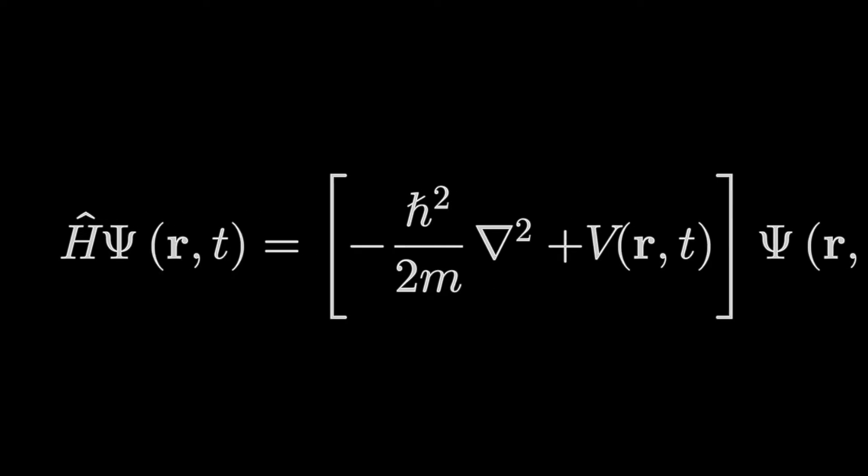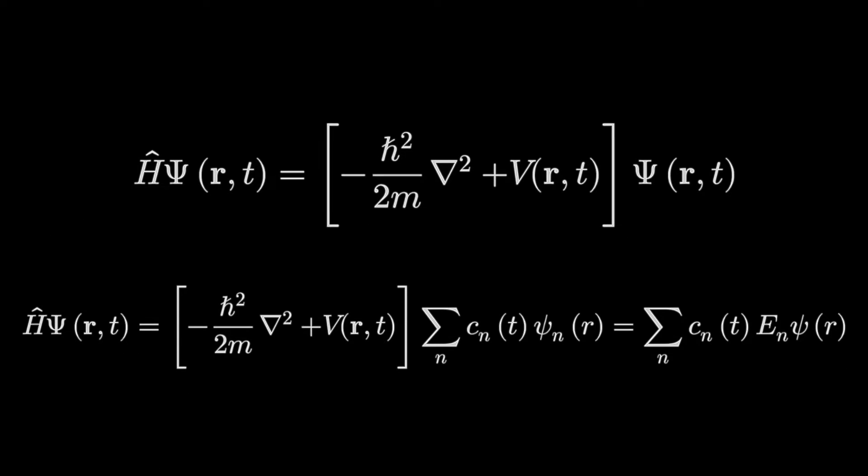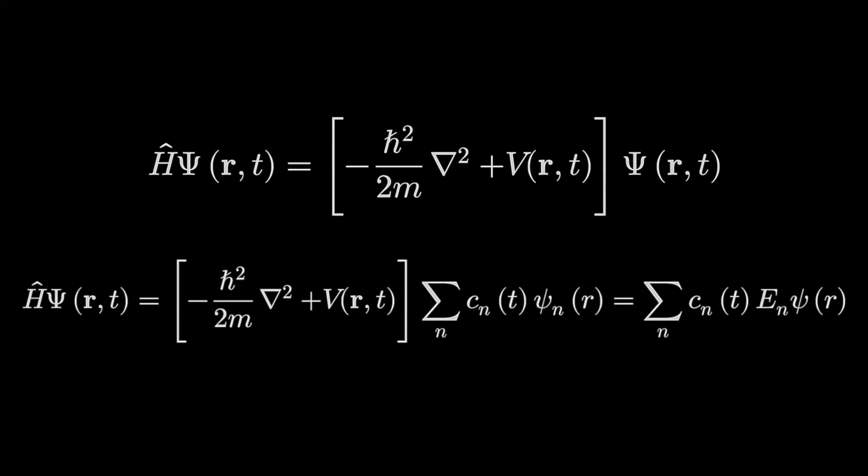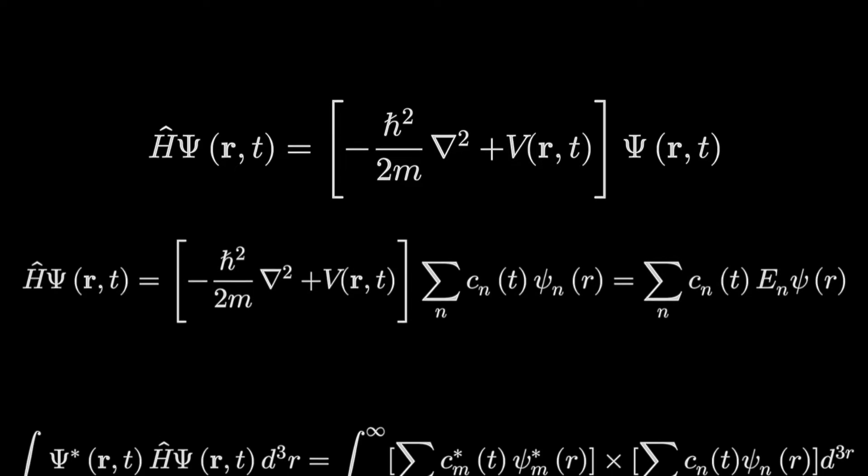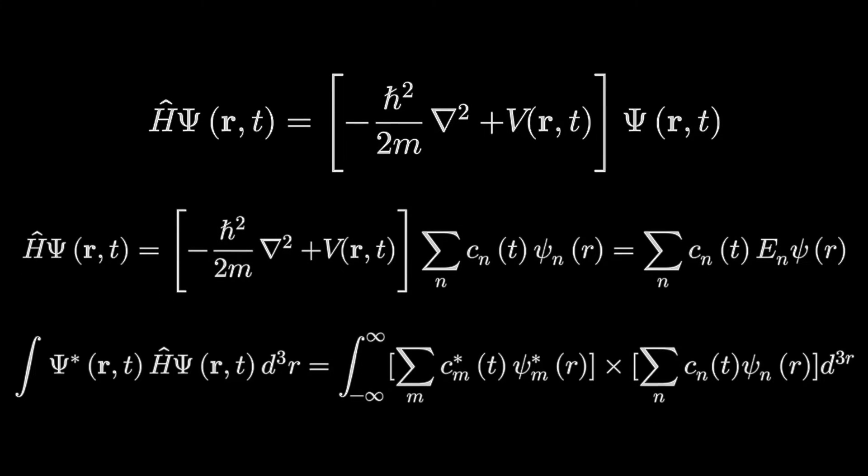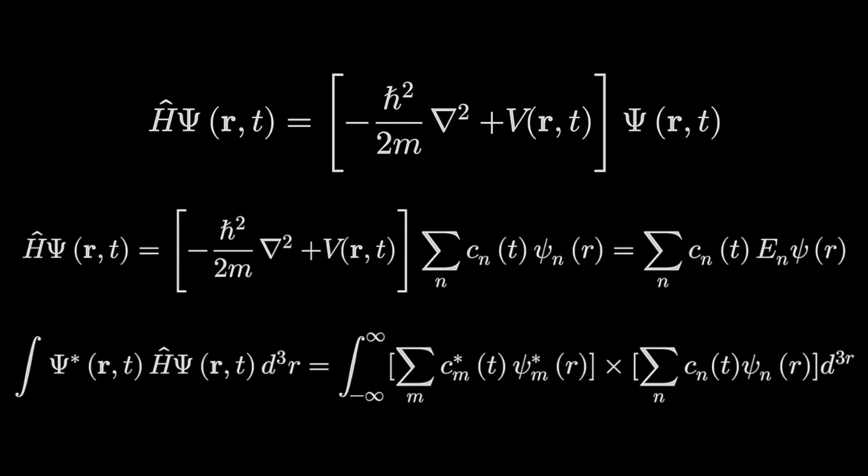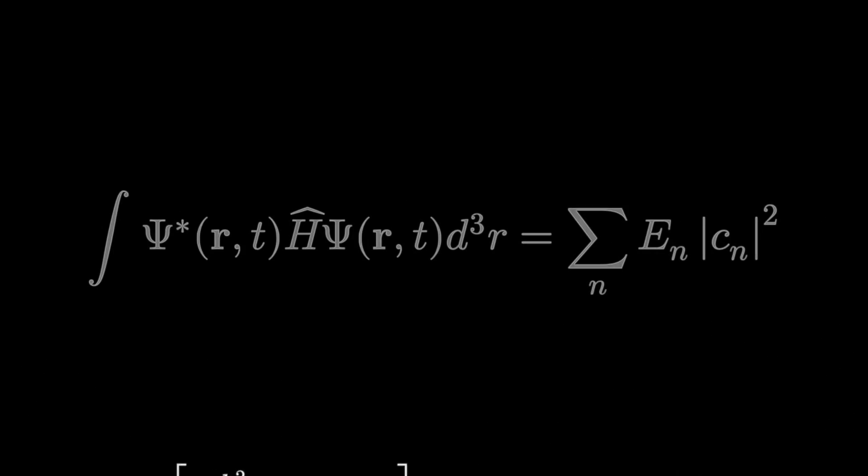So we deduce this following term. We are just simply putting the definition of a Hamiltonian in this equation. And this will be equivalent to the following form. And so our complete integral is the following. Because of orthonormality of the basis functions ψn(r), only terms surviving the double summation are the ones which are n equals m. So we conclude this final integral.